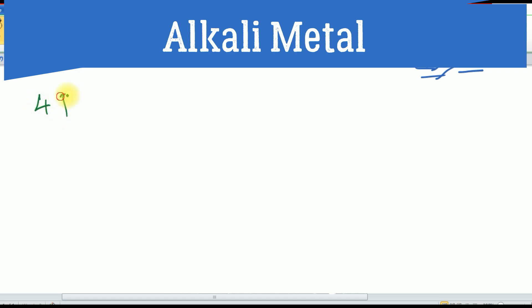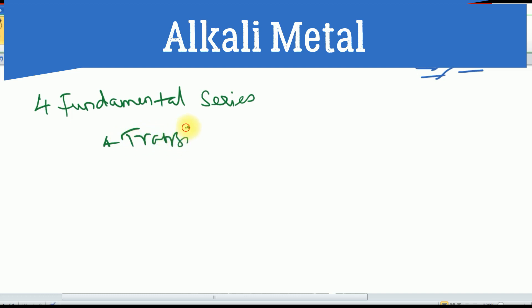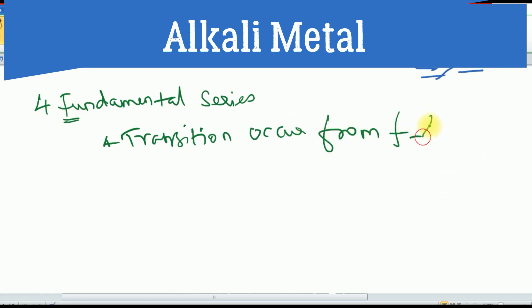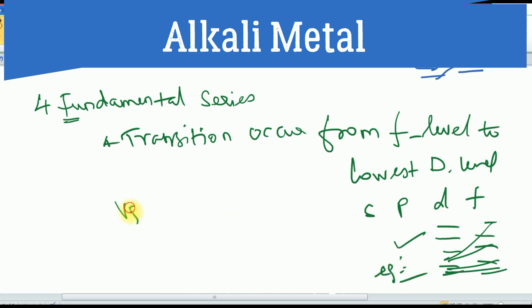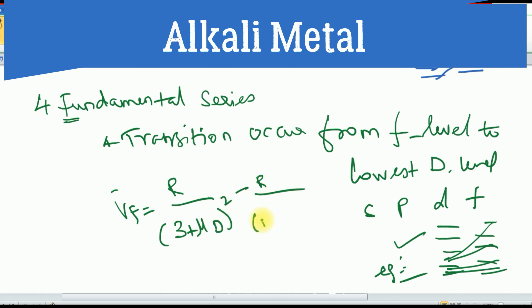The fundamental series: the transition occurs from f levels to the lowest d level. The wave number is written as: ν = R/(3 + μd)² − R/(m + μf)², where m is greater than 4.